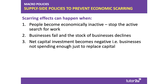One of the key issues as we head through 2020 is the negative impact on aggregate supply of the deep downturn caused by the COVID-19 pandemic. We are starting to see supply side policies introduced to prevent what's called economic scarring. Scarring effects occur when people become economically inactive — losing jobs and becoming long-term unemployed — when businesses fail and the stock of active businesses declines, and when net investment becomes negative as businesses fail to replace obsolete capital and technology in a deep downturn.